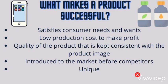Now, what makes a product successful? An example of a successful product is Apple. Apple is a very renowned brand because they have a unique selling point in each of their devices, which makes it stand out from their competitors. So first, the product needs to have a unique selling point — a unique feature which differentiates it from competitors' products. It should satisfy consumer needs and wants, have a low production cost to make a profit, the quality should be consistent with the product image, and it should be introduced to the market before the competitors, because that will give them a greater brand image.